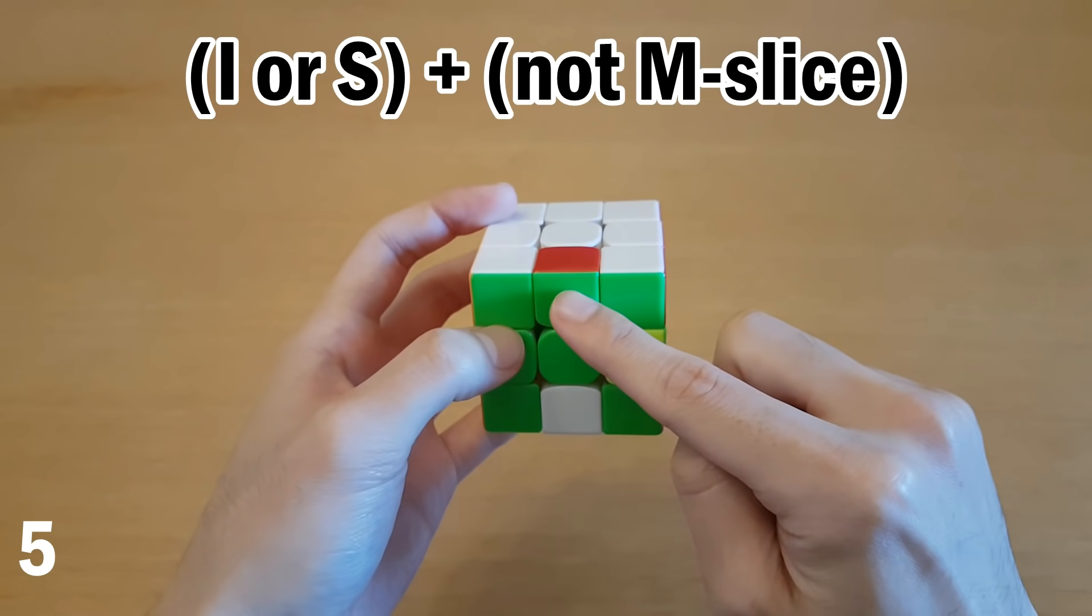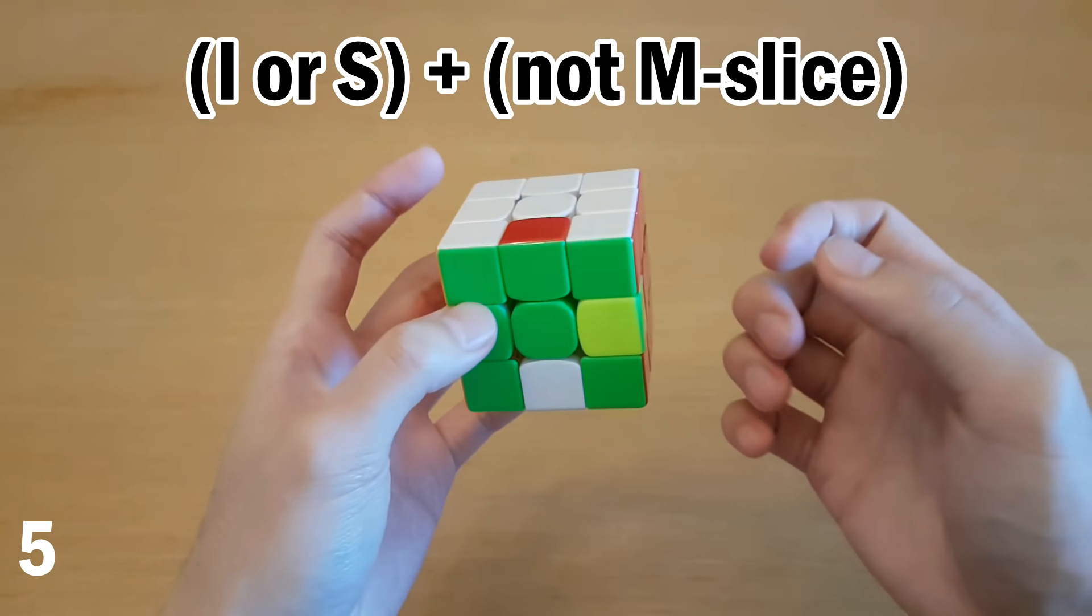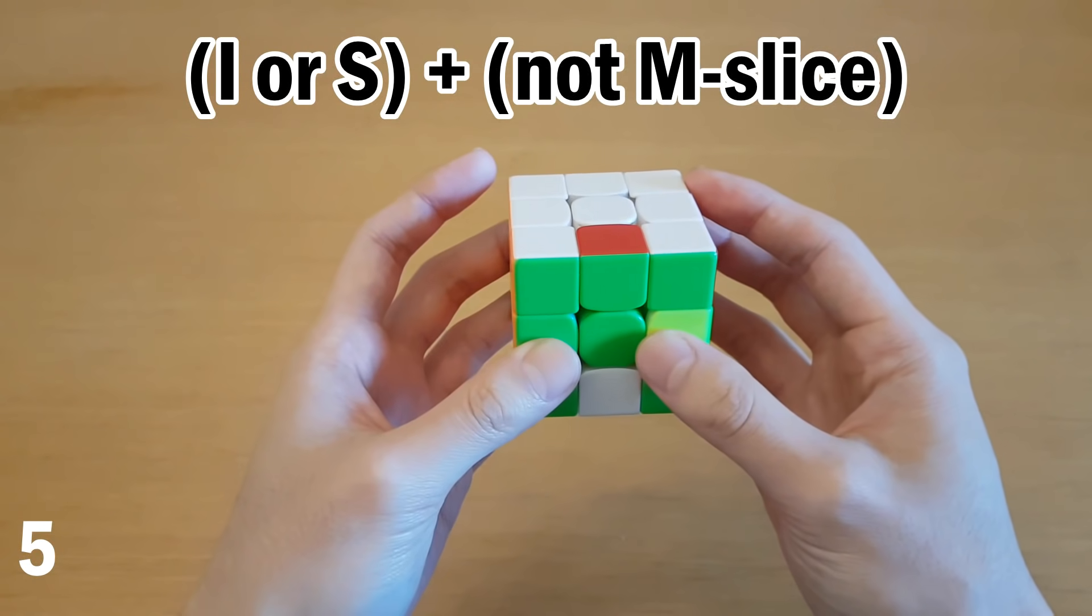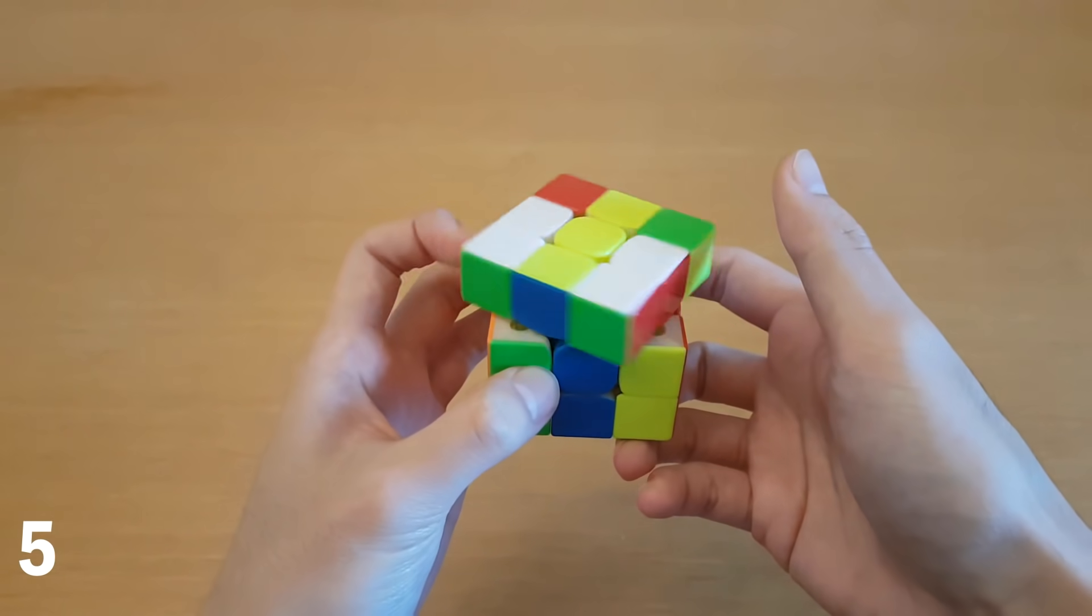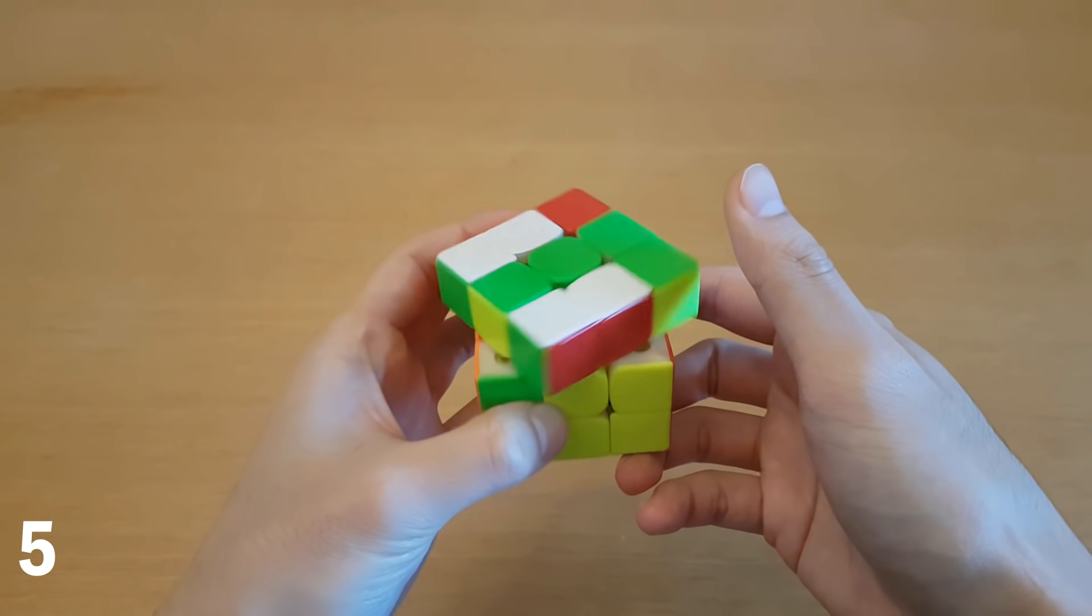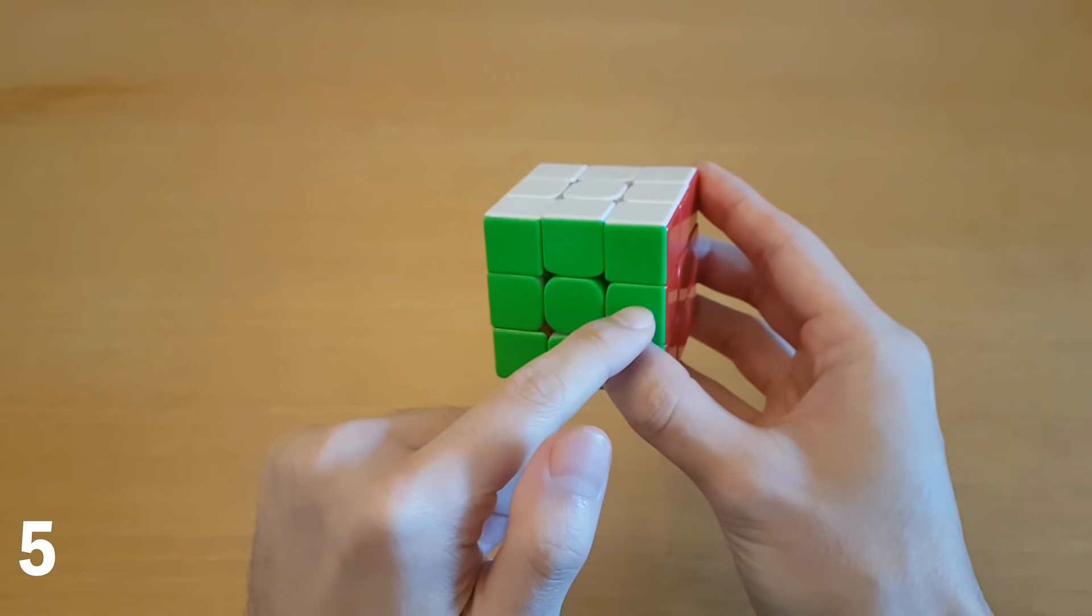Number five, skipping I and S targets. If you get the I target in a letter pair with another target that is not in the M slice, then you can basically skip the I target. So for this one, it would look something like this. M2, setup for J, and then M, undo setup, and M. So that's basically the same length as just doing J, and I skipped I completely.